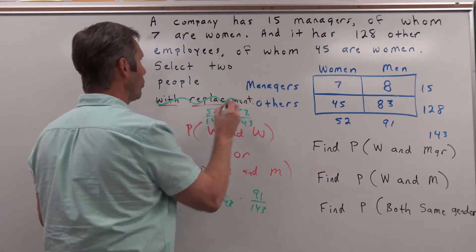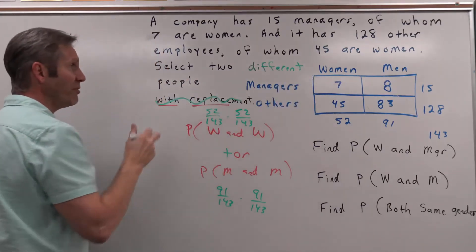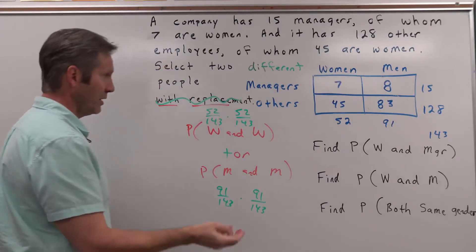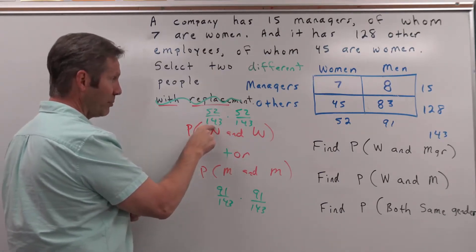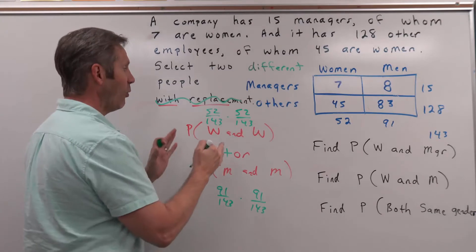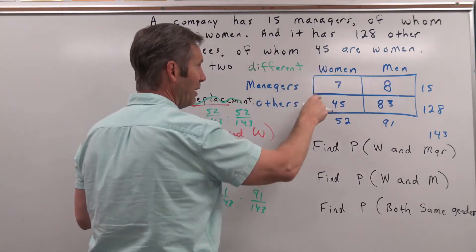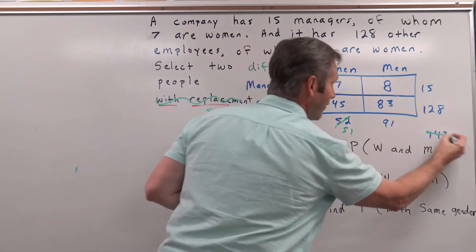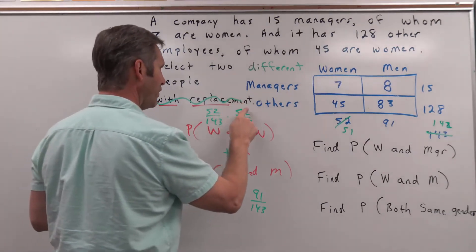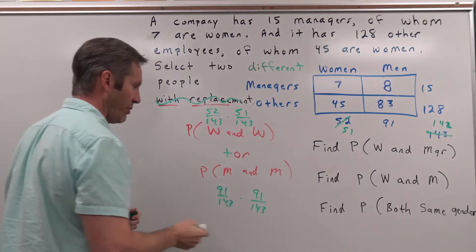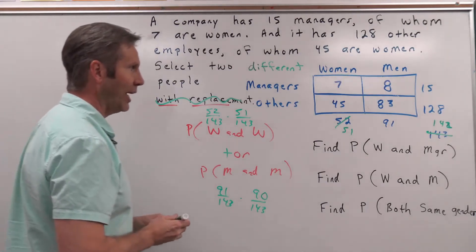But what if we did this without replacement? You'd tend to see the phrase 'randomly select two different people.' How does that affect things? For the probability of getting a woman and then a woman: the first time is 52 out of 143, but now the sample space shrinks — one woman is gone — so it's 51 out of 142. Likewise with the male: we started with 91, but if we took a male and couldn't replace him, it becomes 90 out of 142. Add those two together.